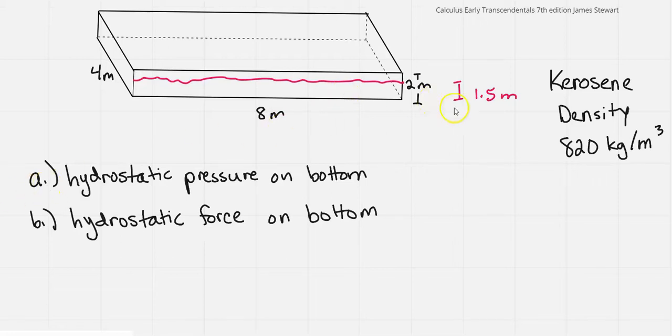The liquid inside is kerosene, which has a density of 820 kilograms per meters cubed, and we have only up to 1.5 meters of kerosene in the tank, so it's not completely full.